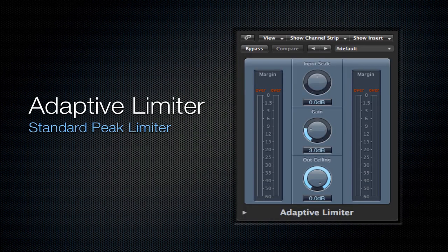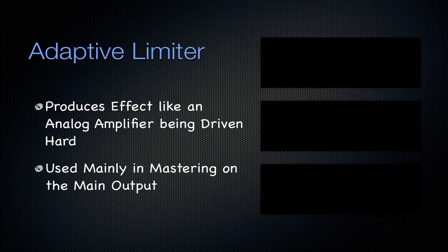Next is going to be an adaptive limiter — we're getting out of the distortion plugins. This is your standard peak limiter. It produces an effect like an analog amplifier being driven hard, and it's mainly used in mastering on the main output. If you do not know what a limiter is, it's basically a compressor with no ratio — anything above a certain threshold is just going to be cut down to that threshold. I find myself using the adaptive limiter more than the limiter, but I'll talk about that more when we get to the limiter plugin.